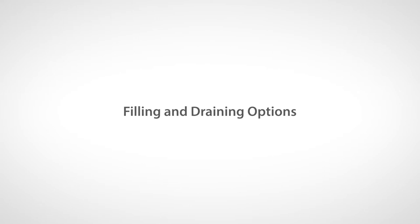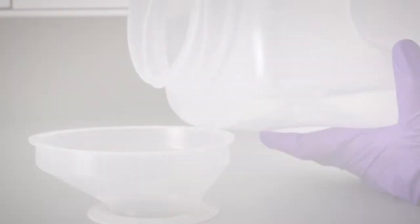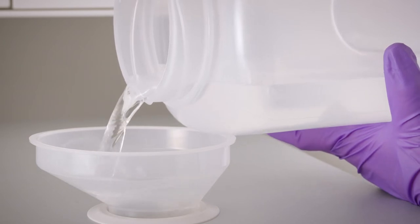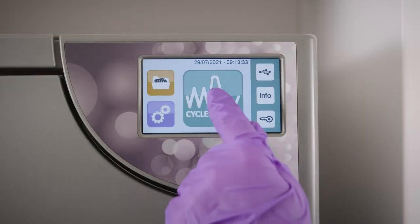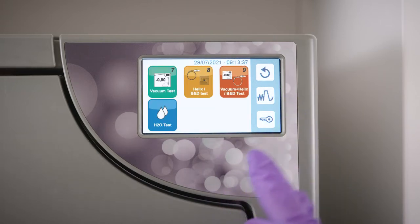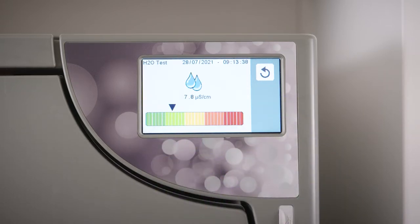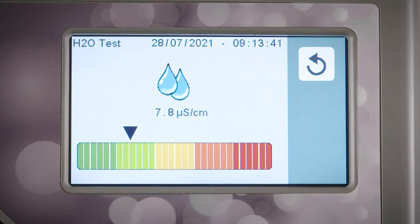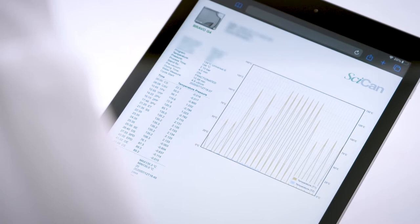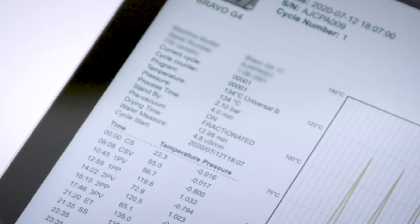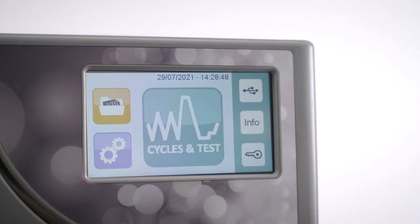Filling and draining options. The Bravo G4 requires high-quality demineralized water. The unit's water quality sensor is designed to protect the unit and will not allow it to function with water that has a conductivity of more than 15 microsiemens per centimeter. Water conductivity is automatically measured at the start of each sterilization or test cycle, and the relative value is indicated in the cycle report. It is important to select the water filling method in the settings menu before you begin filling the unit.